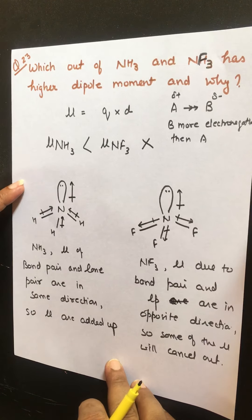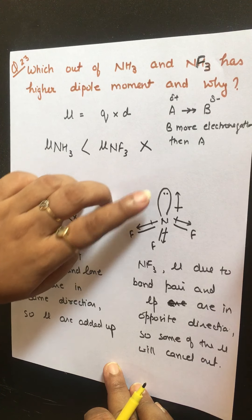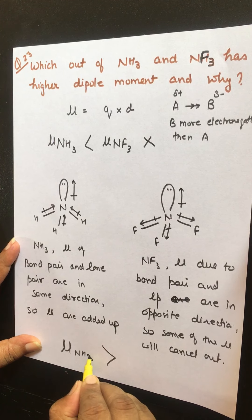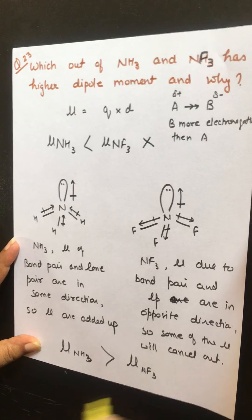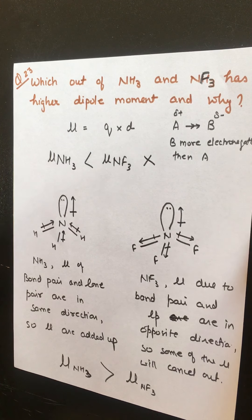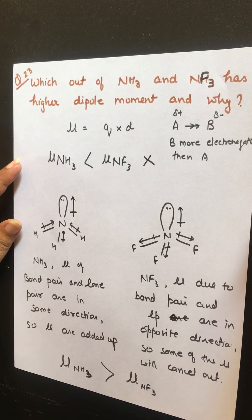In NH₃, the dipoles due to the bond pair and the lone pair are added up, while in NF₃, the bond pair dipoles and lone pair dipoles are in opposite directions, so they cancel out. This means the dipole moment of NH₃ is greater than that of NF₃. Out of NH₃ and NF₃, NH₃ has the higher dipole moment value. In the next video, we will look at the next NCERT problem.